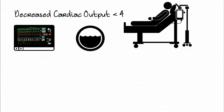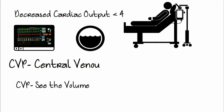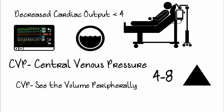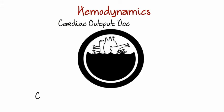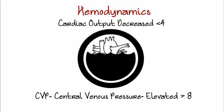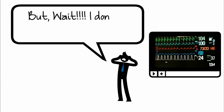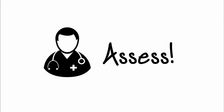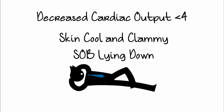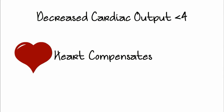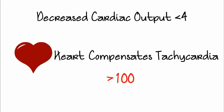They should be monitored. As the fluid builds up, it will build up peripherally. We have CVP — central venous pressure — or 'C the volume peripherally.' This is also 4 to 8, like cardiac output, but that volume will be elevated. So reviewing hemodynamics: cardiac output less than 4, central venous pressure greater than 8. If you don't have hemodynamic monitoring, assess your patient. With decreased cardiac output less than 4, the skin is cool and clammy, and they have shortness of breath lying down. The heart tries to compensate with tachycardia, or a heart rate greater than 100.